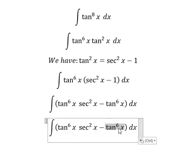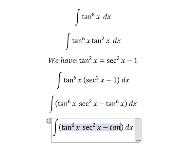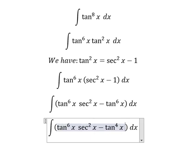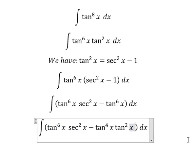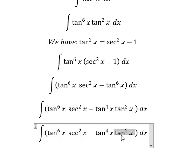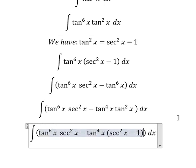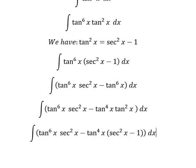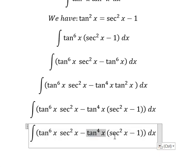This one we can write as tan^4(x) with tan^2(x). Now we have this one here, so I will transform this one into this form and this one multiplied by this one.